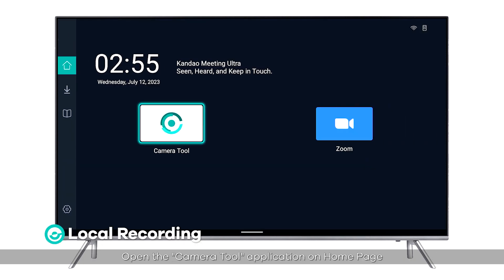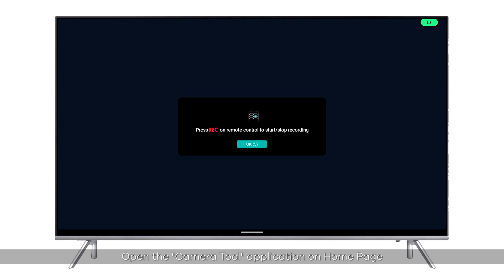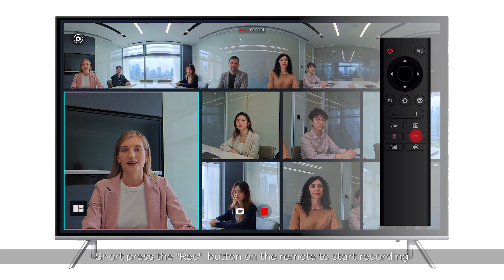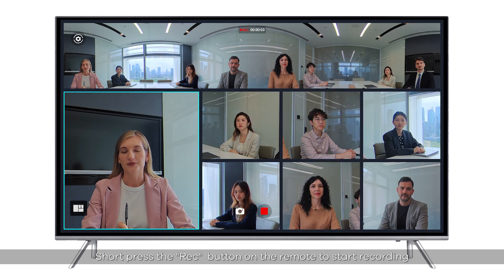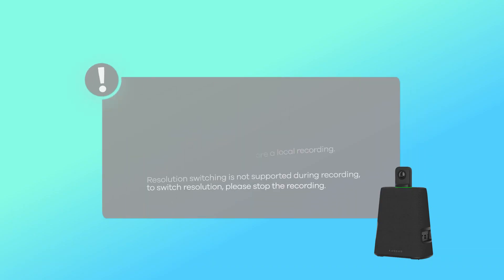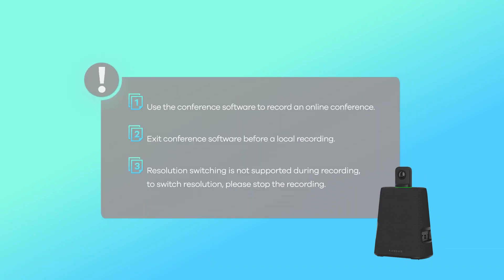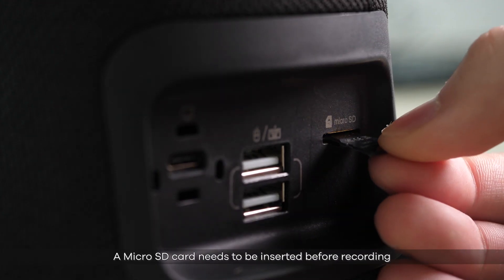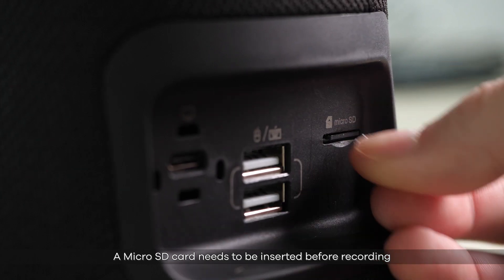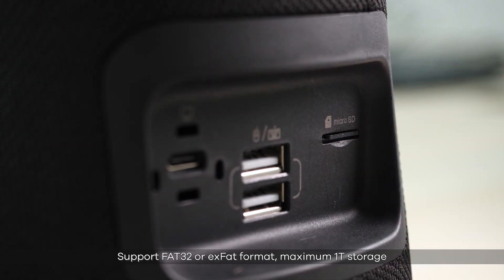Local Recording: open the Camera Tool application on the home page. Short press the Rec button on the remote to start recording; click the Rec button again to stop. Note: use the conference software to record an online conference, and exit the conference software before a local recording. Resolution switching is not supported during recording — please stop the recording first. A micro SD card must be inserted before recording; supports FAT32 or exFAT format, maximum 1TB storage.